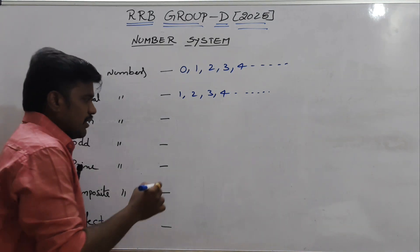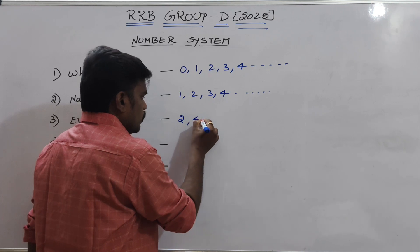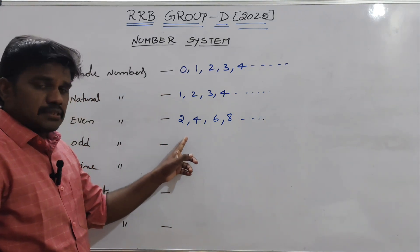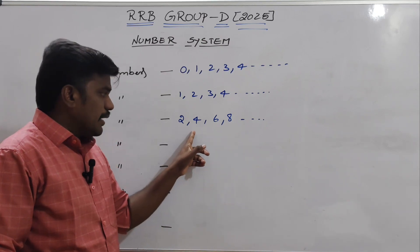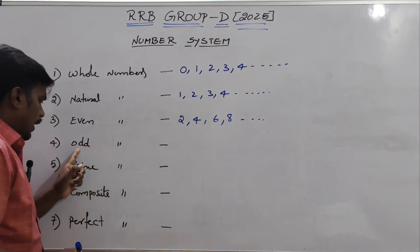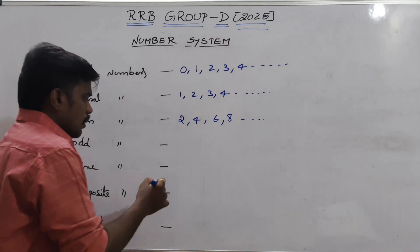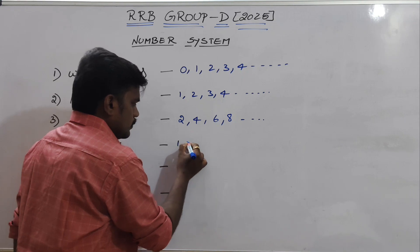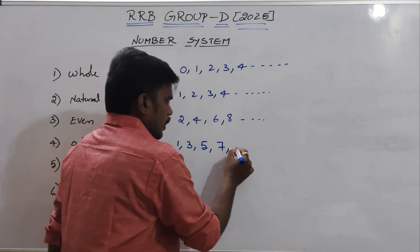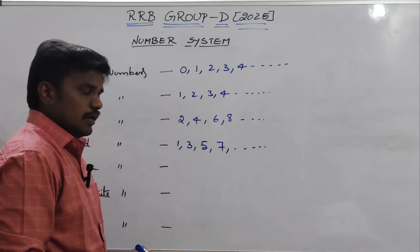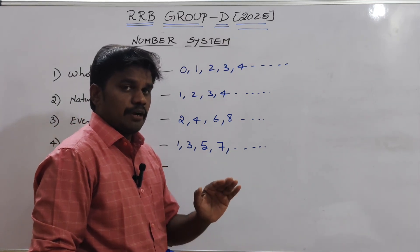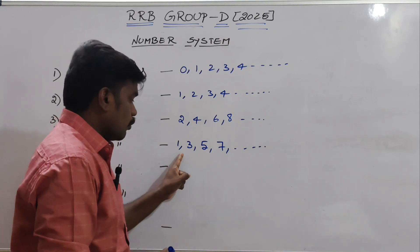Even numbers are 2, 4, 6, 8 and so on. Even numbers can be multiplied with 2. And odd numbers are 1, 3, 5, 7 and so on. Odd numbers cannot be divided by 2 evenly.